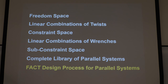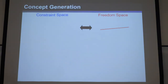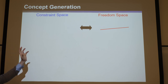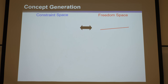Let's do some examples of the FACT design approach. But first, let's look at the constraint space of just a single red rotation line. To get a single rotation, you need to find every single blue line that intersects that red line somewhere at least once.